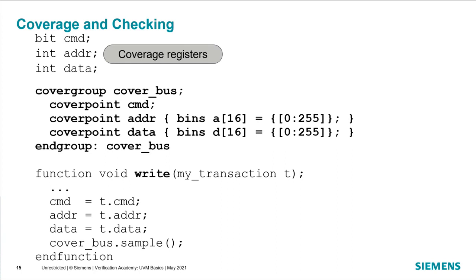There will most likely be a cover group or some other data structure to see what's going on. A cover group allows us to record information about the transactions into the coverage database — we may look at the type of command, the address, the data, and there may be cross-cover points. The cover group defines what we're looking for based on the contents of our verification plan. Inside the write method, we take the information out of the transaction passed in as the argument, copy that to the coverage registers, and call the sample method of the cover group to record that information in the coverage database.